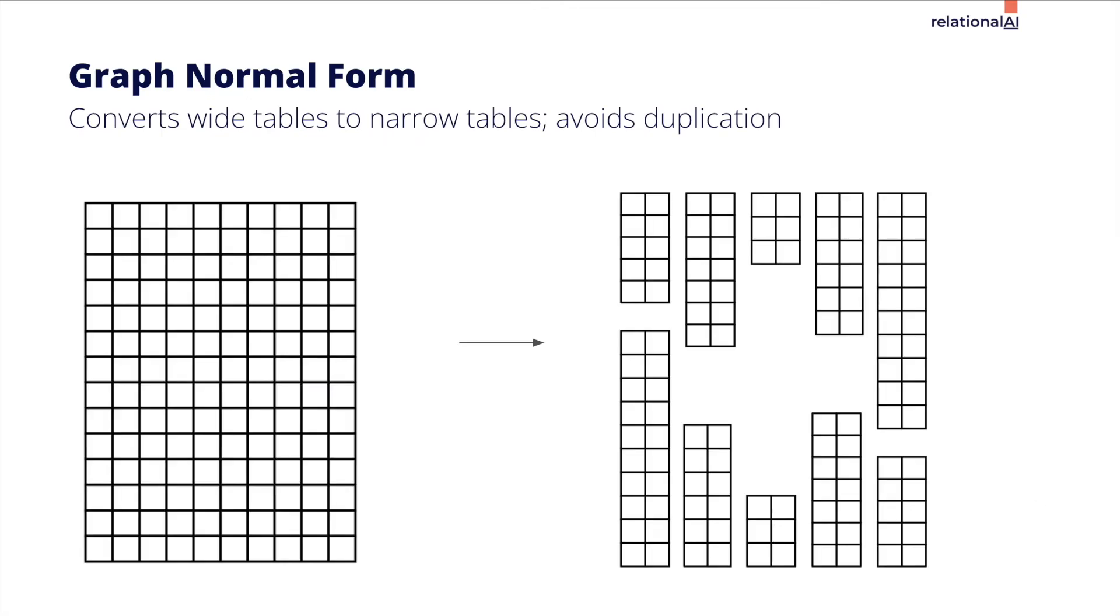At Relational AI, we believe that fully normalized relational data is the key to knowledge graph scalability and performance. By breaking down a wide table into several narrow tables, we save on space, and we enable semantic query optimization. For more details, see our shot on graph normal form.